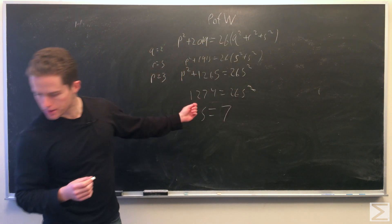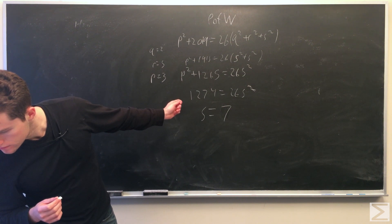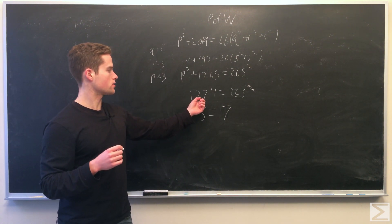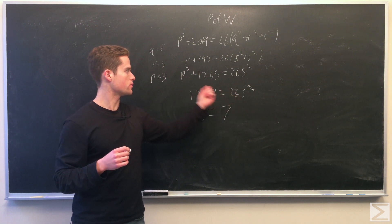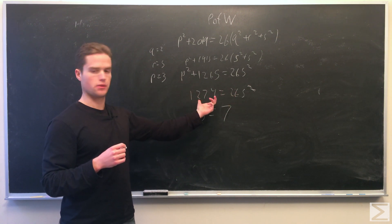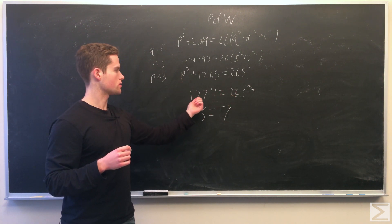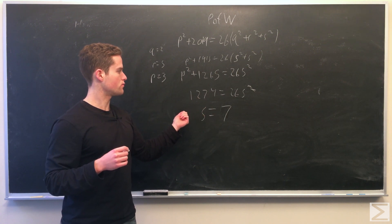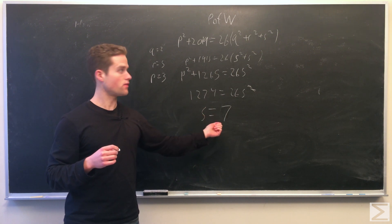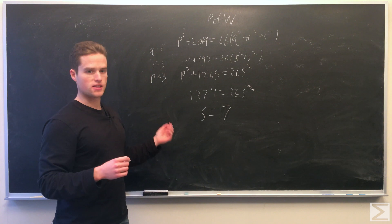So then we're left with 1274 equals 26 s squared. We just put in p equals 3. And now we just solve this. 1274 over 26 is 49, which will leave us with s equals 7. And so this is a solution.